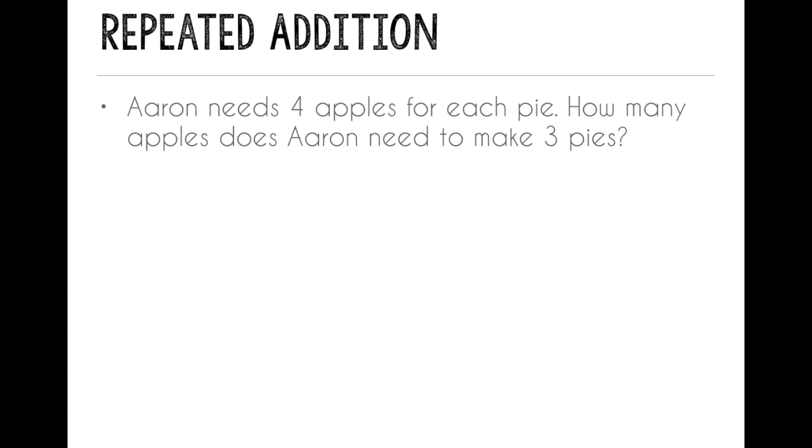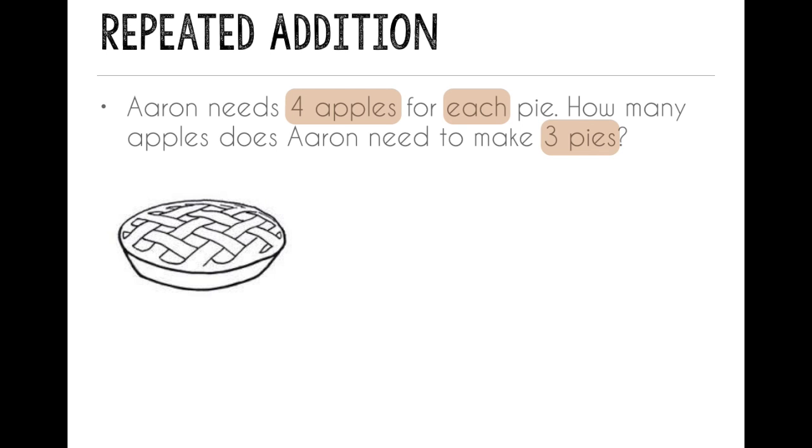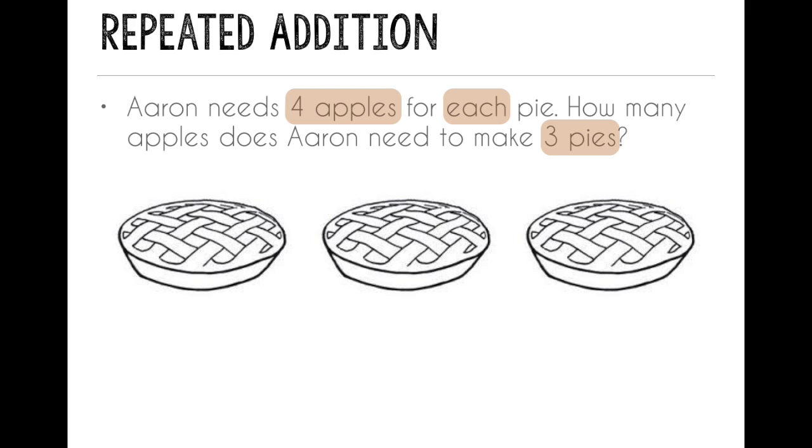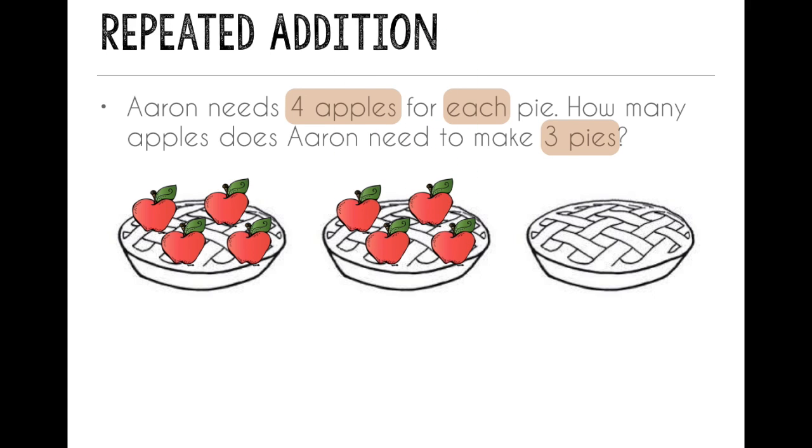First I want to look for any important information. I see that there's 3 pies, and he's going to use 4 apples for each pie. That word, each, lets me know that every pie is going to have 4 apples, not 4 apples for all of the pies. So I can draw 3 pies, and then I want to put 4 apples in each. So I put 4 apples in my first pie or my first group, 4 apples in my second pie, and 4 apples in my third pie.